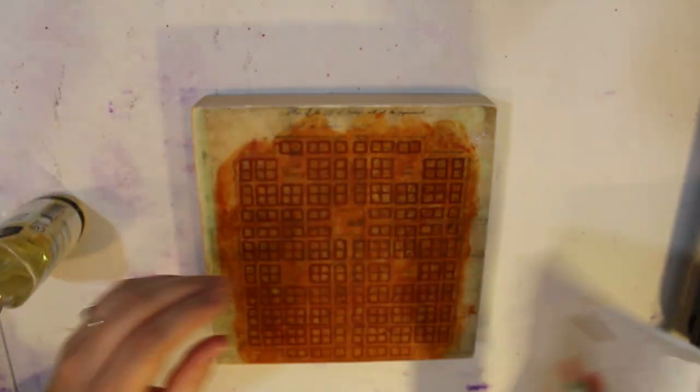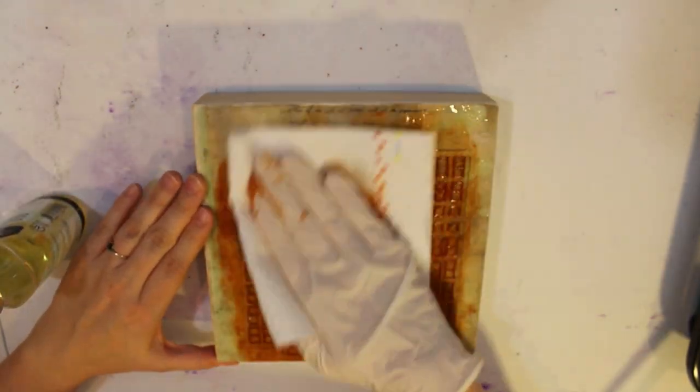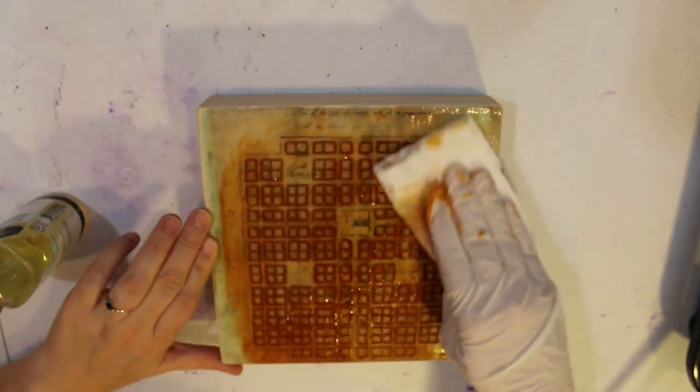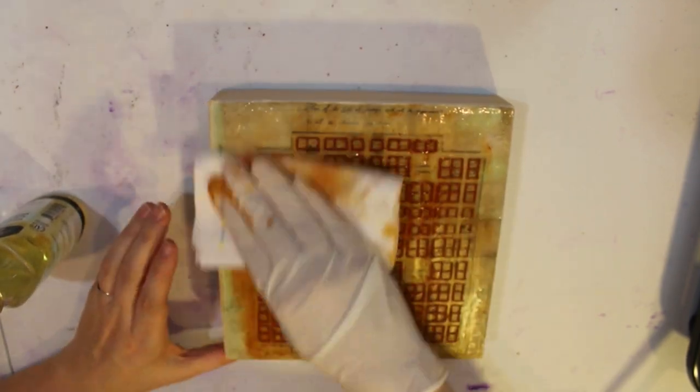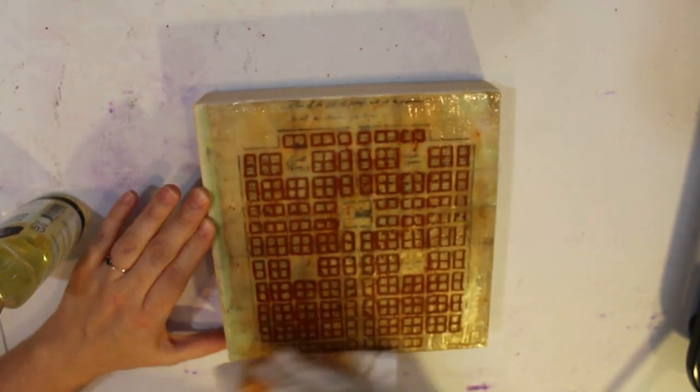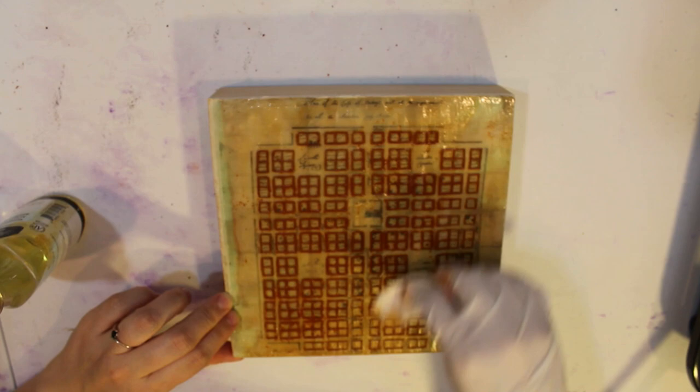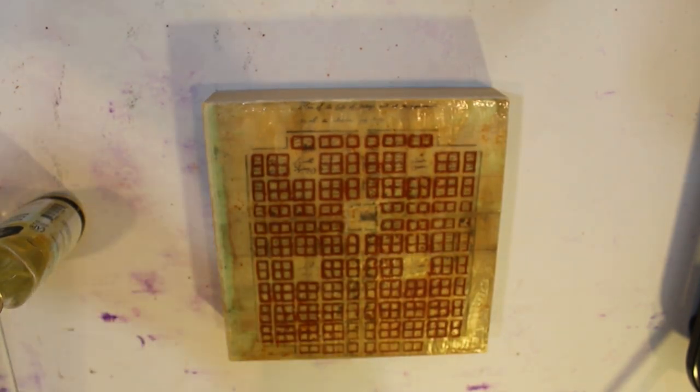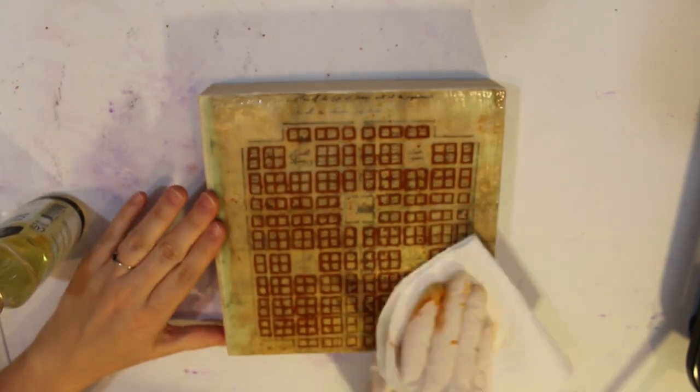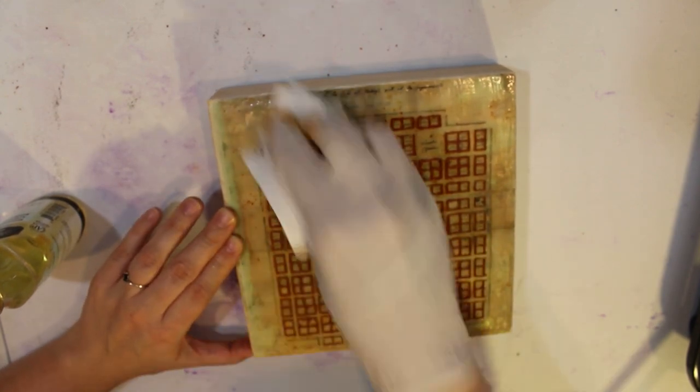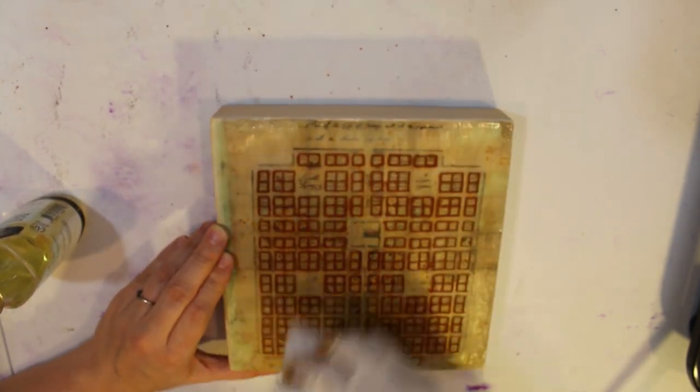Here I'm using linseed oil to wipe the excess paint off the surface, so you can just see what's left of the paint inside the lines that I've made. This part can take a while too because as you get most of it off, you still get swipes of paint that come out of the lines, so it can take a little while to get all the excess.